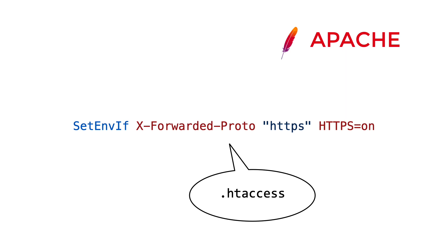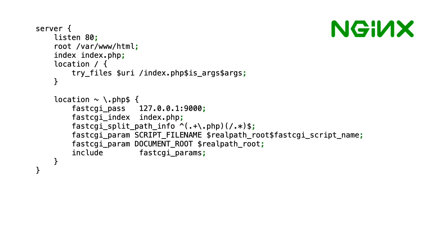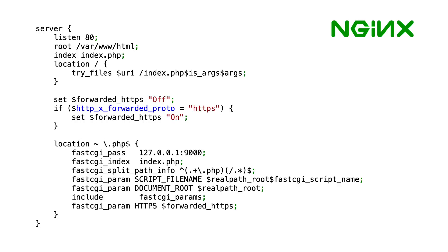By setting that environment variable the super global HTTPS will automatically be enabled in PHP. If you're using Nginx instead of Apache as your web server, you can alter a FastCGI parameter in your vhost config. You define the HTTPS FastCGI parameter and set its value to on if the X-Forwarded-Proto header is HTTPS. We do this using a forwarded_https custom variable — the name doesn't really matter, you can call it whatever you want — but we set its default value to off, then we check the value of X-Forwarded-Proto and if it's HTTPS we enable it, and in the end your PHP super global HTTPS will be on as well.